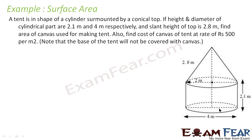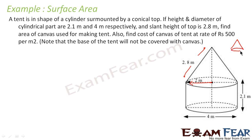The height and diameter of the cylindrical part are 2.1 m and 4 m. So the height is 2.1 m, the diameter is 4 m, and the radius is 2 m. The slant height of the conical top is 2.8 m. So this shape is nothing but a cone sitting on top of a cylinder.